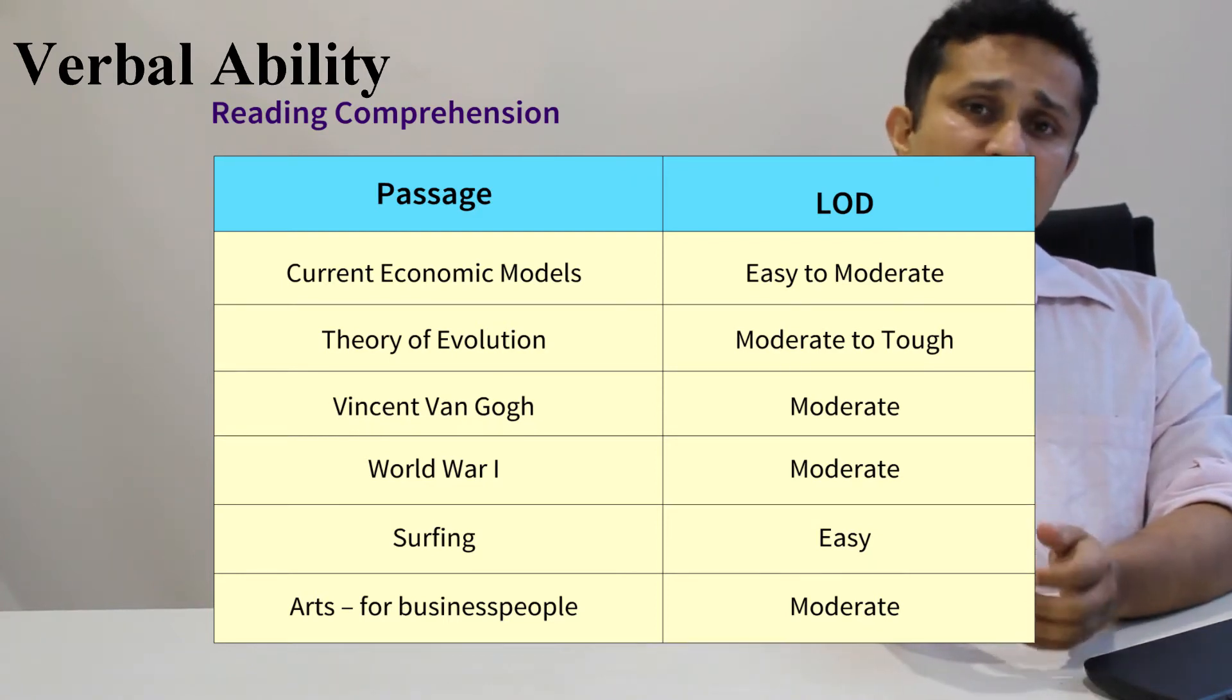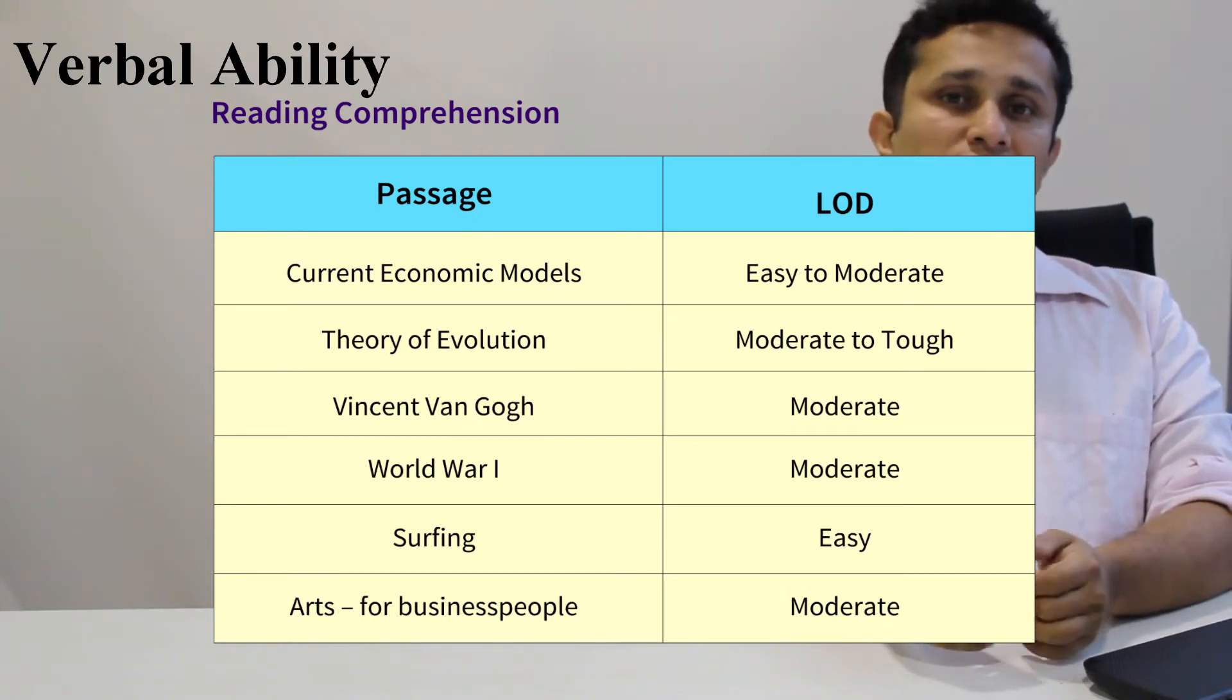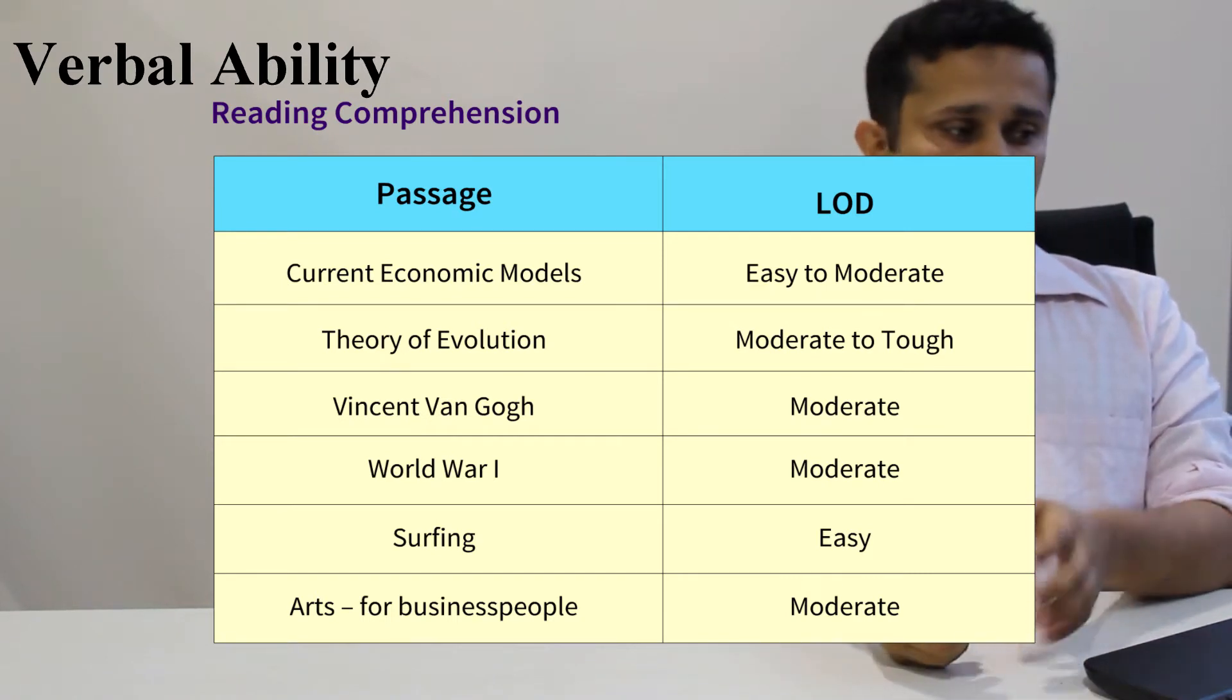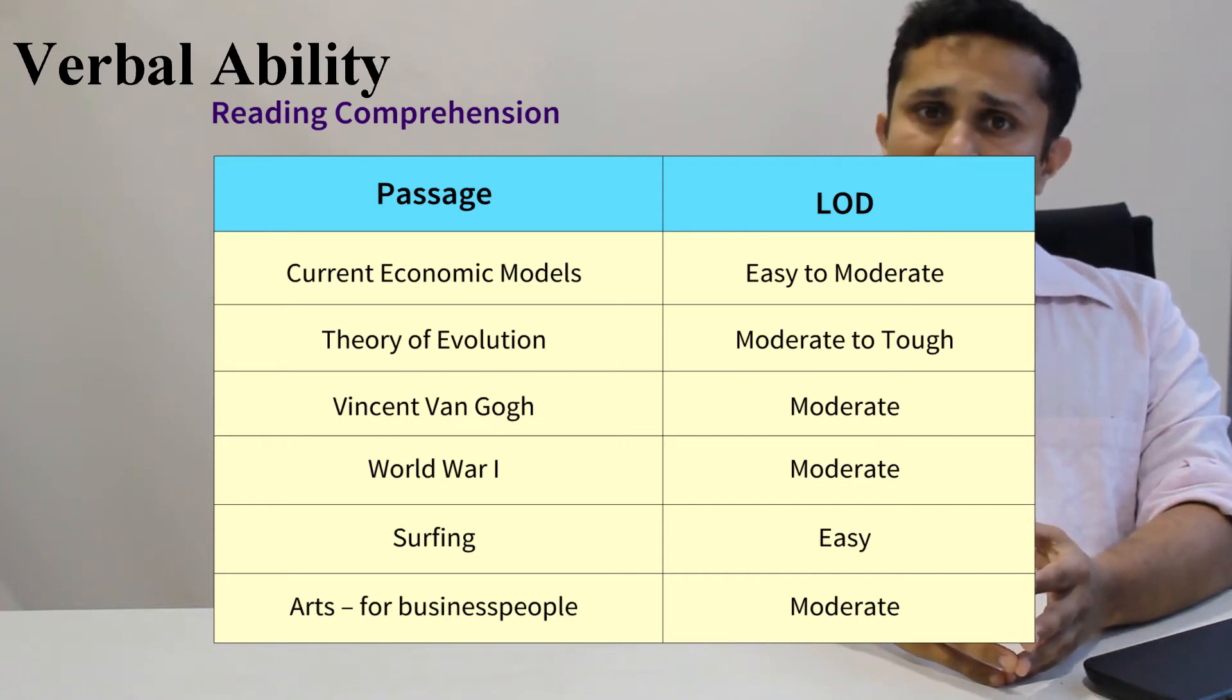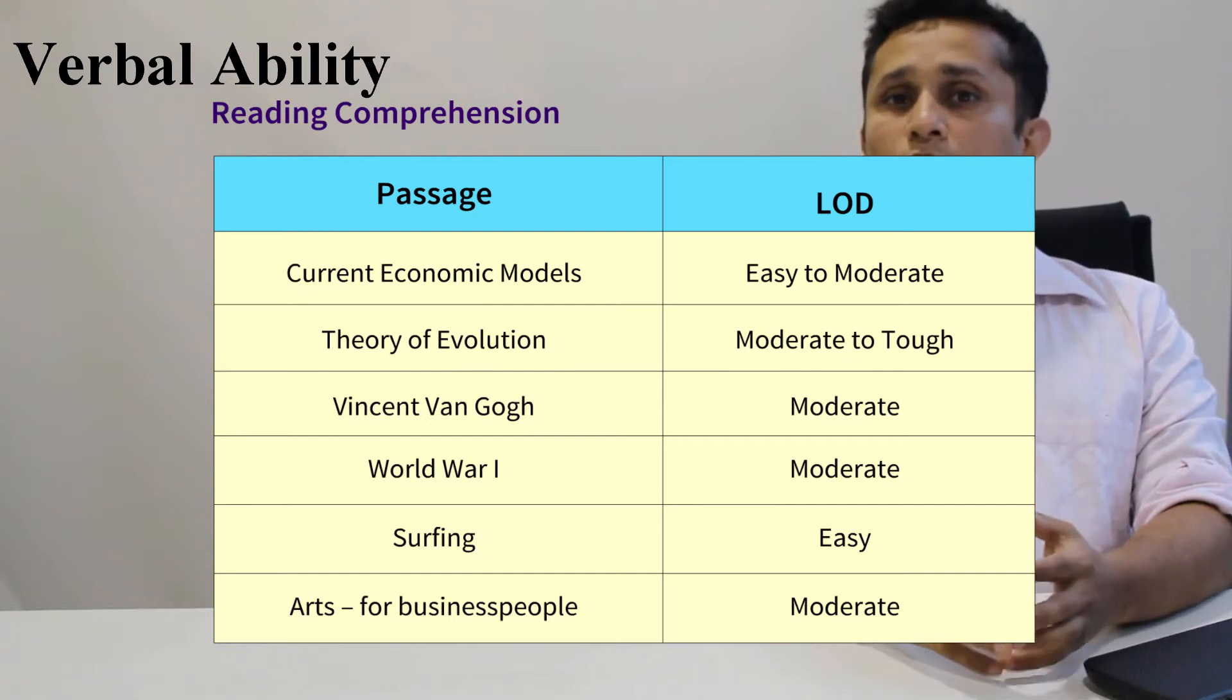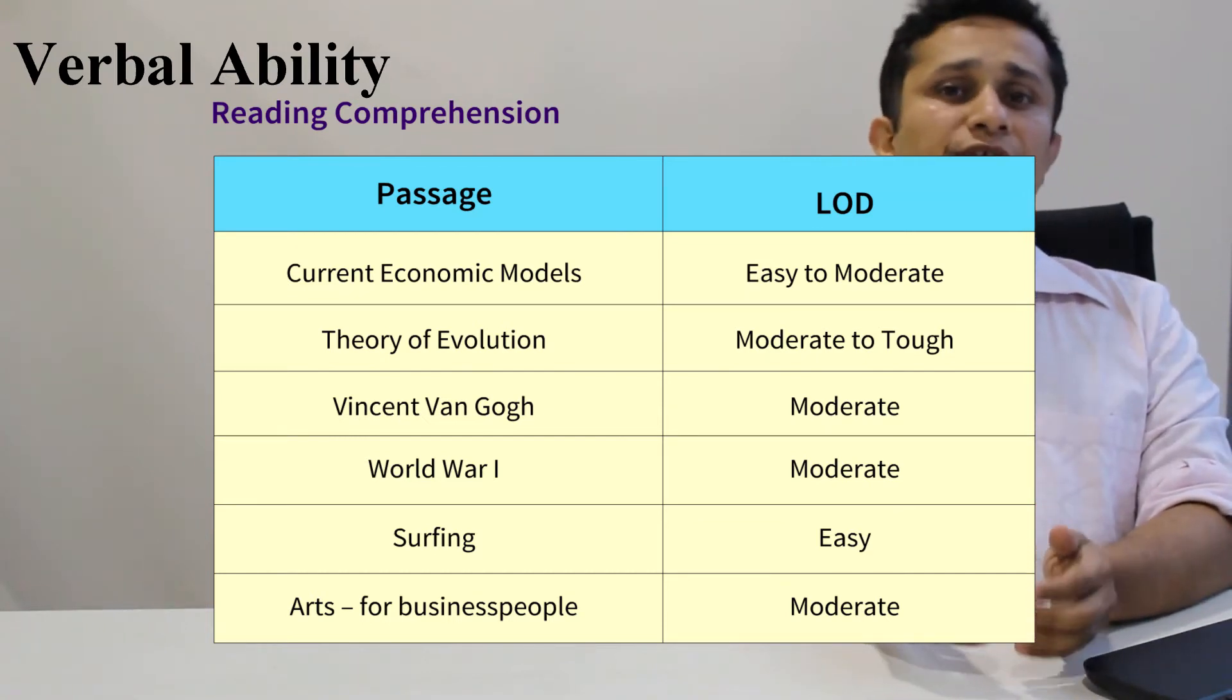The easiest RC of this set or of this test really was a three-question RC on surfing as a sport. That was something that you should have definitely attempted. Similarly, there was another three-question RC on current economic models which was the first RC of the paper. That is again something which you could have tried.